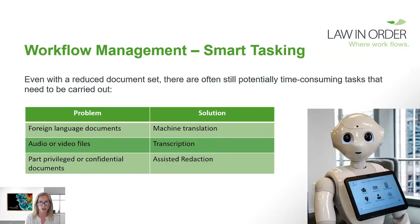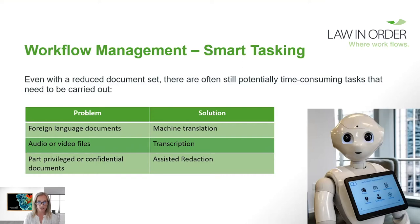Even when you've reduced your document set, you can still have some time-consuming tasks. For example, if you discover there are foreign language documents in your material, machine translation can really help — you don't necessarily need to hire foreign language paralegals or work it all out yourself. You can also have audio and video files transcribed, which means you can run keyword searches across them too. For redactions — blocking out privileged or confidential information — you can run algorithms through your programs with a few keywords to apply redaction across documents for you. The old school way was to use a marker across the page then scan it in.